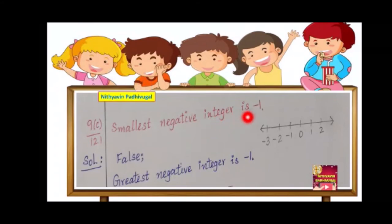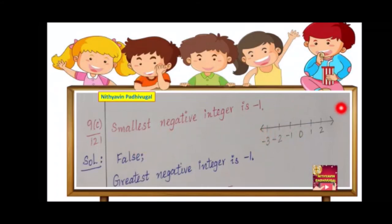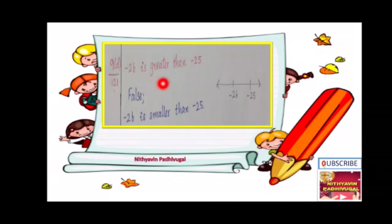The smallest negative integer is minus 1 — no. The smallest negative integer is undefined, because the number line extends indefinitely in both directions. Minus 1 is the greatest or largest negative integer. So the statement is false. The correct statement is: the greatest or largest negative integer is minus 1. Next: minus 26 is greater than minus 25 — false, because minus 26 is to the left side of minus 25, so minus 26 is smaller than minus 25.